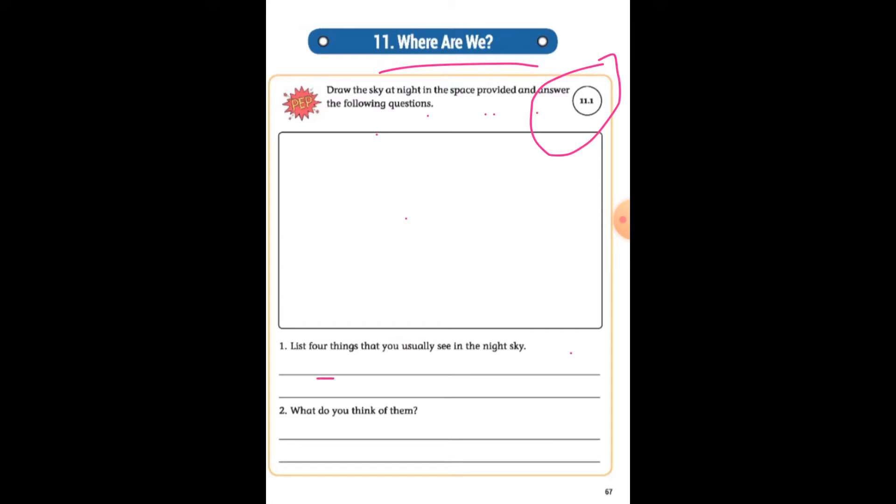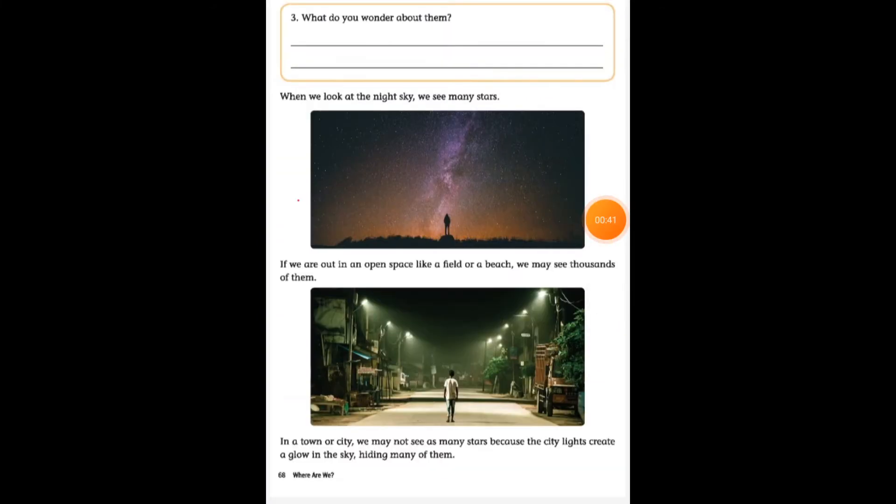Here is activity 11.1. List four things that you usually see in the sky. Four things you have to write here. What you usually can see in the sky and what do you think of them? What do you wonder about them?